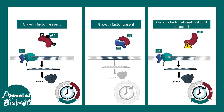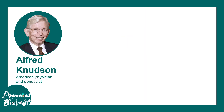The third situation is when there is no growth factor but PRB is mutated. Even though PRB should be inhibiting E2F, it cannot do so because it is non-functional. In this condition, even without growth factor, cell cycle progression would still happen — the cell would grow and divide despite there being no appropriate conditions for growth. This dysregulation of the cell cycle due to PRB mutation often leads to cancer.